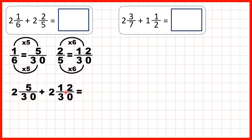That gives us 17 thirtieths, and because that's not an improper fraction we can write that in our answer box. Remember when we add fractions, the denominator stays the same and 5 plus 12 is 17. Now we add our whole numbers: 2 plus 2 is 4, so our answer is 4 and 17 over 30.